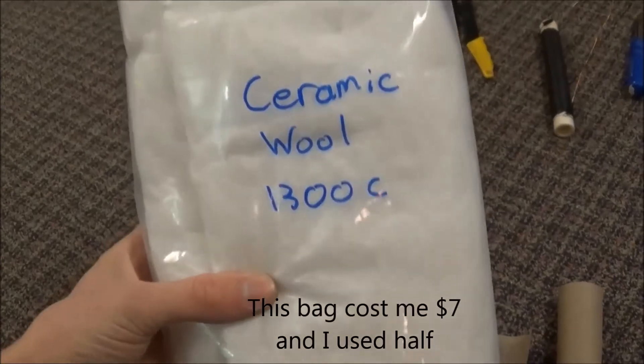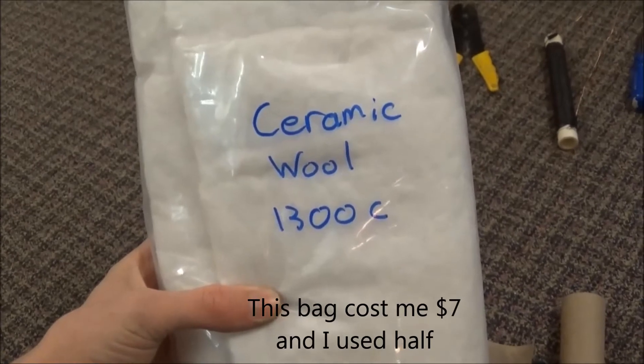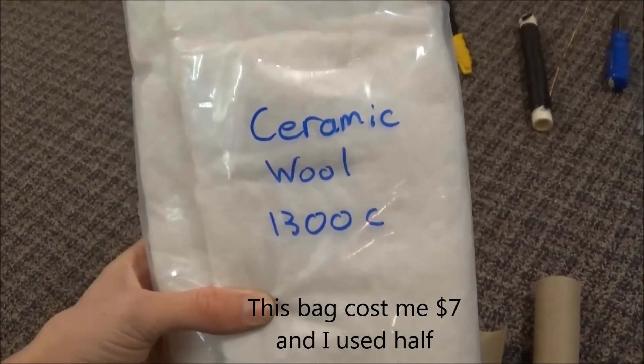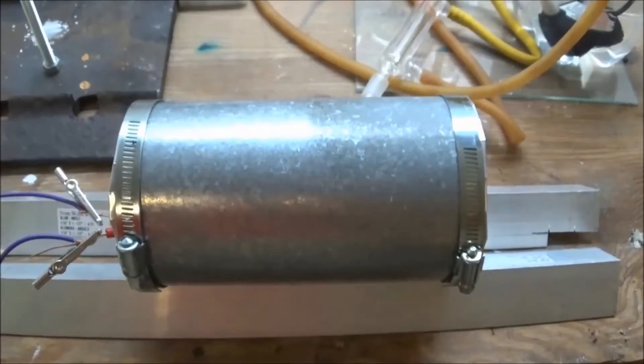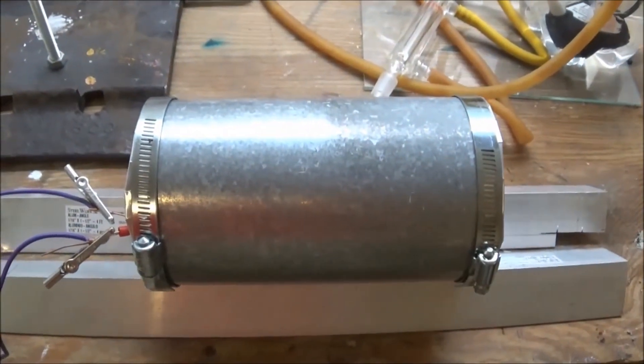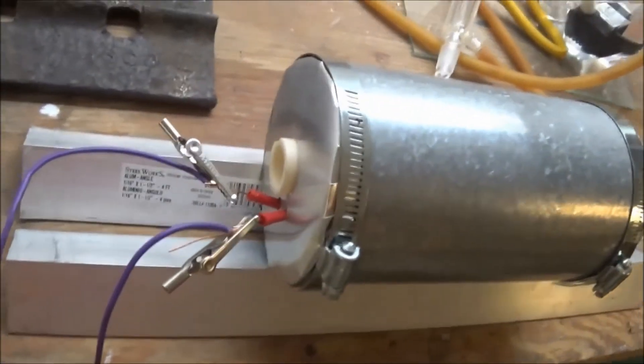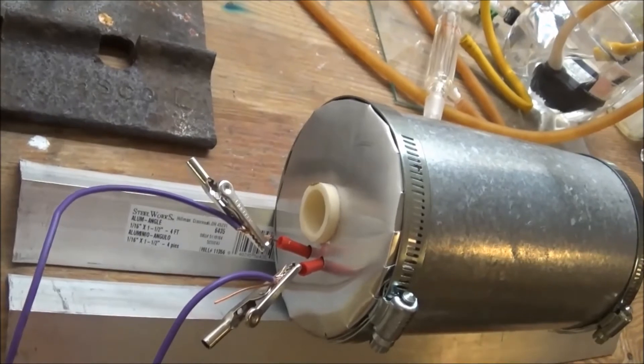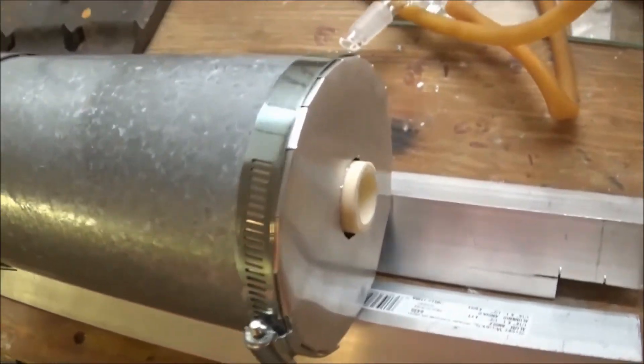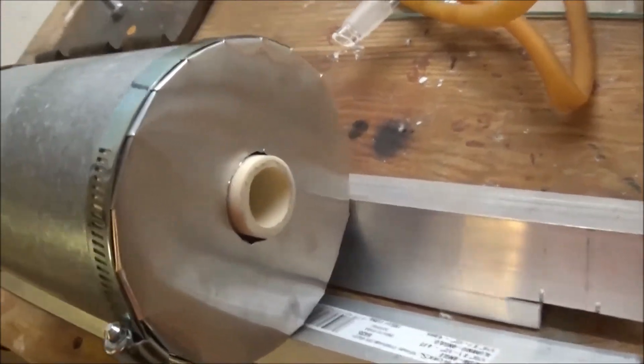For insulation, I got this ceramic fiber or ceramic wool which is rated up to 1300 celsius. After wrapping insulation around the tube, I put everything inside of the housing and clamped on the other end. It took about one square foot of half inch ceramic fiber in order to insulate everything well.